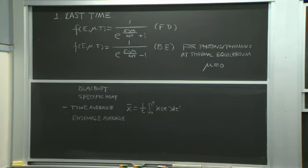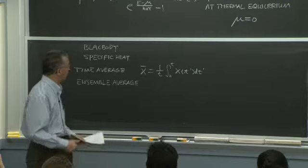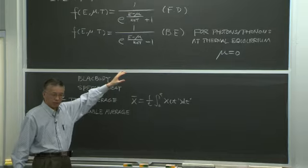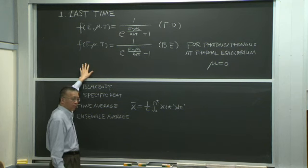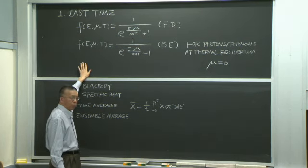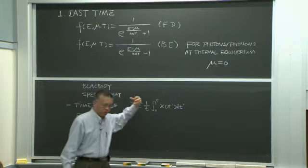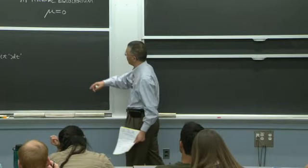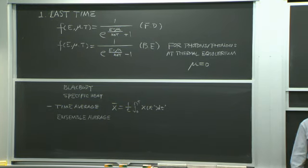Last time we were talking about the Fermi-Dirac distribution and the Bose-Einstein distribution. This is the average number of particles in one quantum state at a certain energy, with a certain temperature and chemical potential. For photons at thermal equilibrium, the chemical potential mu equals zero.